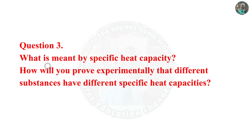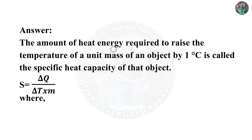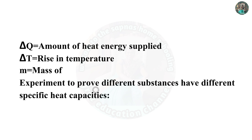Question 3: What is meant by specific heat capacity? The amount of heat energy required to raise the temperature of a unit mass of an object by 1°C is called the specific heat capacity of the object. So S = ΔQ / (ΔT × M), where ΔQ is the amount of heat energy supplied, ΔT is the rise in temperature, and M is the mass of the object.